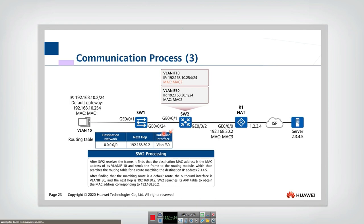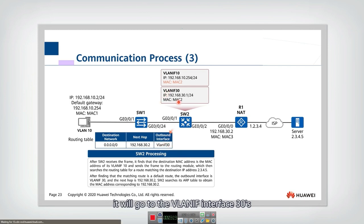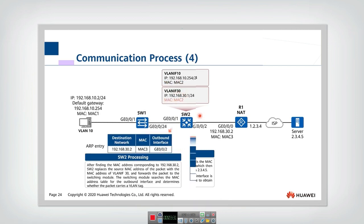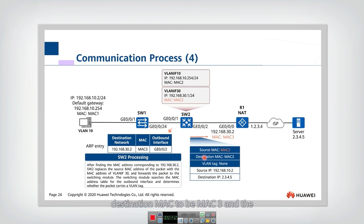That is done by the routing module in switch two, a layer three switch. When the packet goes out through VLAN interface 30, it will go to the VLAN interface 30's module in the switch module. This VLAN interface 30 will check whether the packet can be transmitted out. Switch two will find the MAC address corresponding to the next hop — it finds the MAC address is MAC3 — so it will change the destination MAC to MAC3 and the source MAC to itself. The source IP and destination IP will keep unchanged.